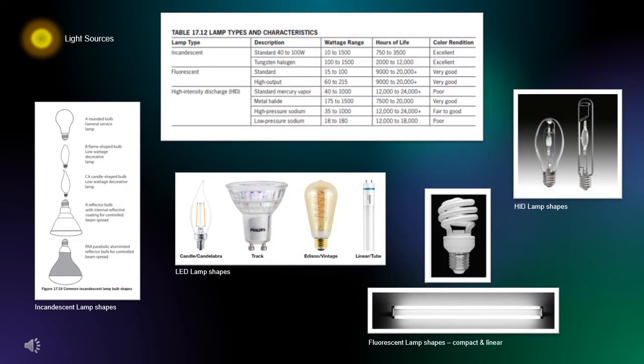Until recently, incandescent lamps were the most common light sources used in residential applications. Fluorescent lamps were mostly used in commercial and institutional spaces. Today, LEDs, otherwise known as light emitting diodes, and CFLs, known as compact fluorescent lamps, are taking over much of the market. High intensity discharge lights are used to illuminate large indoor and outdoor arenas such as stadiums and parking lots.